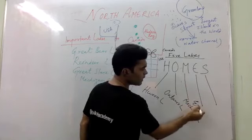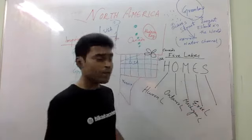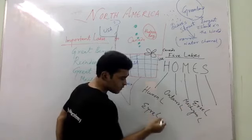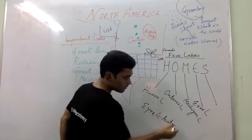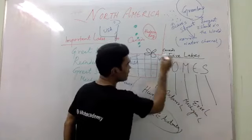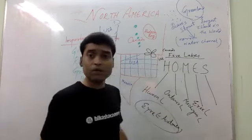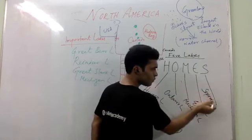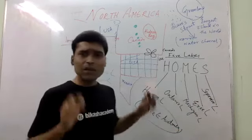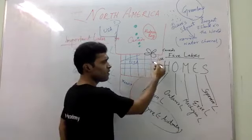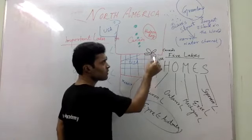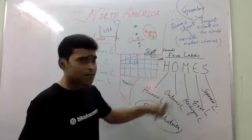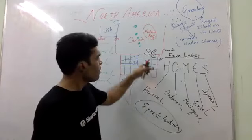E stands for Erie Lake. You should not confuse this with Lake Eyre — E-Y-R-E — which is a lake in Australia. But this Erie Lake is present on the border of Canada and USA. And the last one is Superior Lake. These five lakes are found along the border of Canada and USA — they look very beautiful just like a flower, and they can be called the lifeline of USA and Canada.